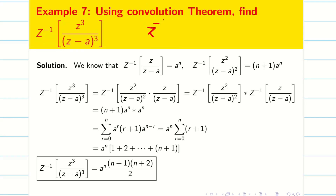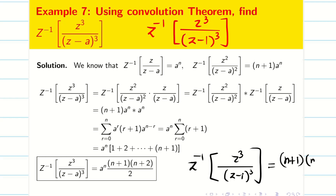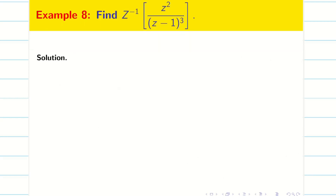For example, if the exam asks for z-inverse of z³/(z−1)³, it is very easy: simply replace a by 1, so the answer is (n+1)(n+2)/2.